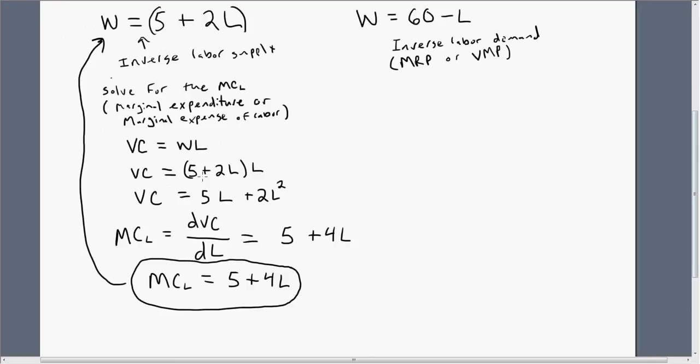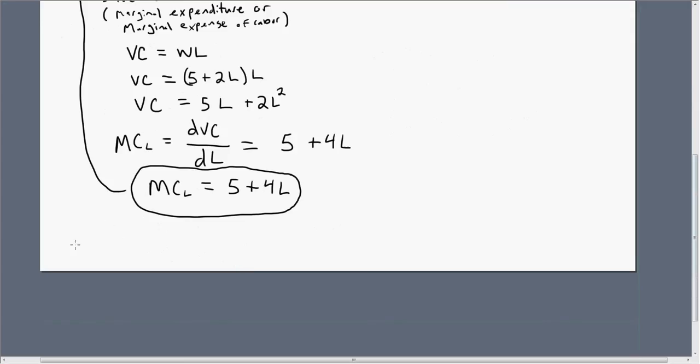So in the future, you don't have to really go through all these steps to derive the marginal cost of labor. Just as an example, if somebody said the inverse labor supply equation was W equals 10 plus 1.5L, the marginal cost of labor is just going to be 10 plus 2 times 1.5, or 3L. So that's what it will simplify down to.